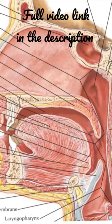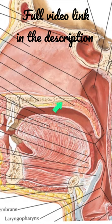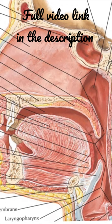The palate intervenes between the roof of the mouth and the floor of the nasal cavity. This is the oral cavity and this is the nasal cavity. The palate forms the roof of the oral cavity and the floor of the nasal cavity. It arches both from before backwards and side to side. The palate consists of two parts: